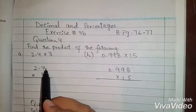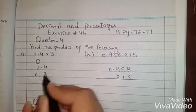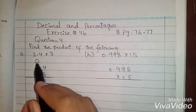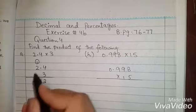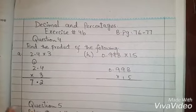We multiply 3 with 4. It will be 12, 1 carry. Decimal point as it is. We will come to point. 3 with 2 plus 1, 7. 7.2 is the answer of part A.